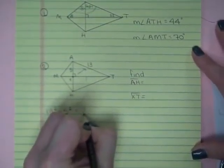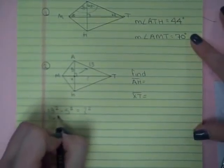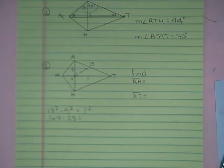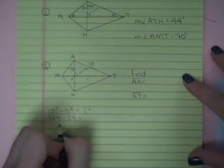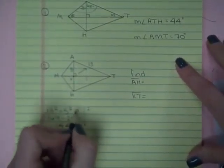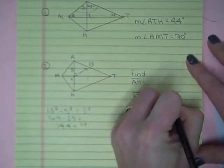That's going to be my unknown squared. So 169 minus 25, and I get 144 is my unknown squared. So I will have to take the square root, and from X to T is 12 units long.